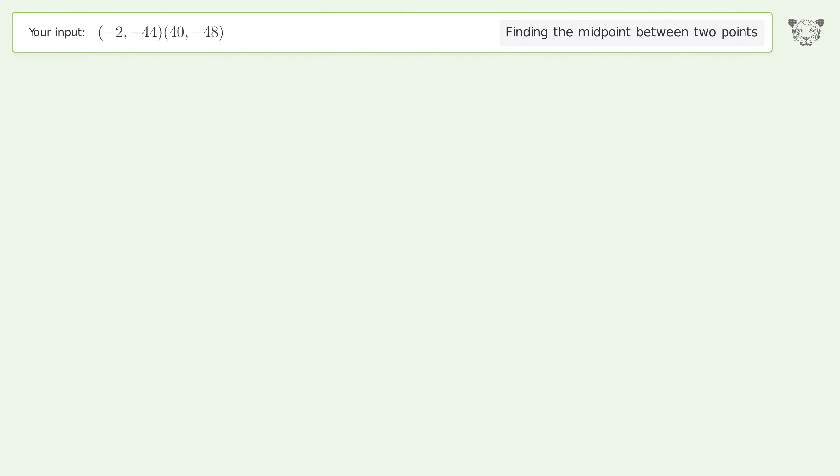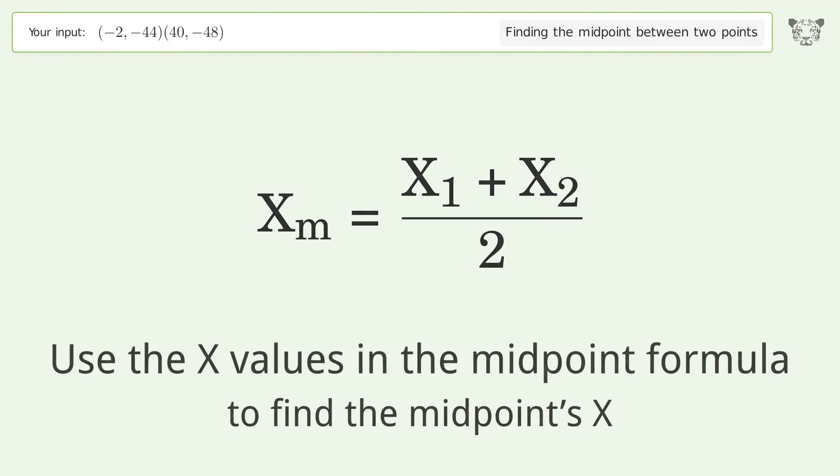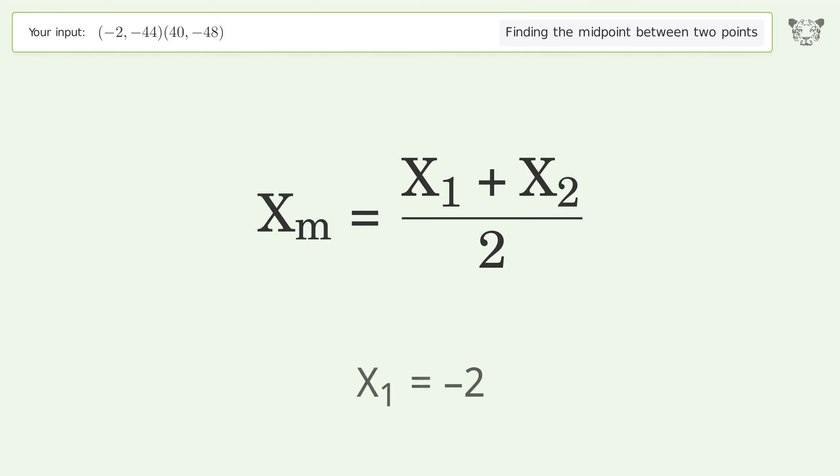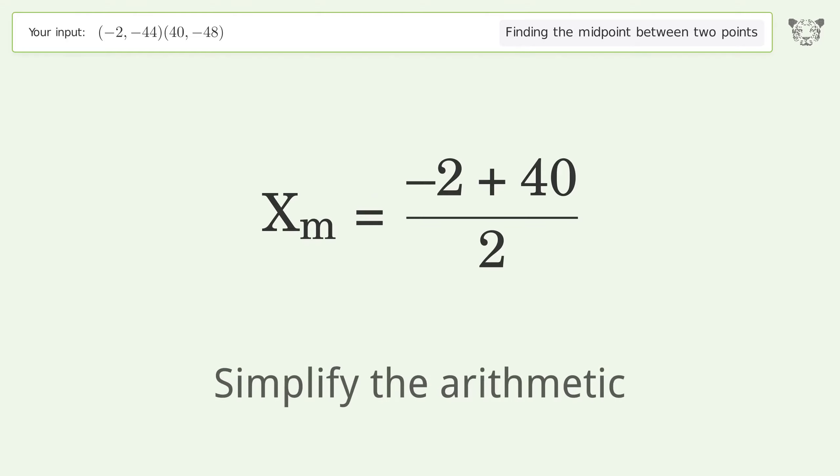Xₘ represents the midpoint of the two points. Use the x values in the midpoint formula to find the midpoint's x-coordinate. X₁ = -2, X₂ = 40.